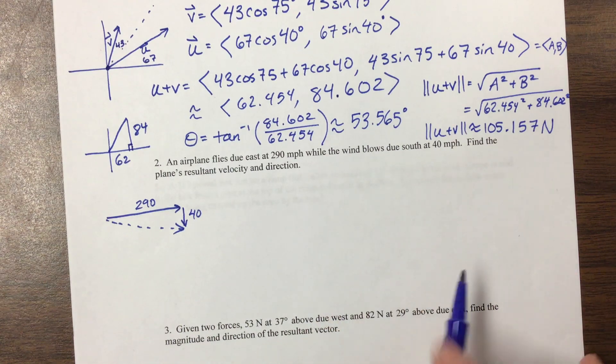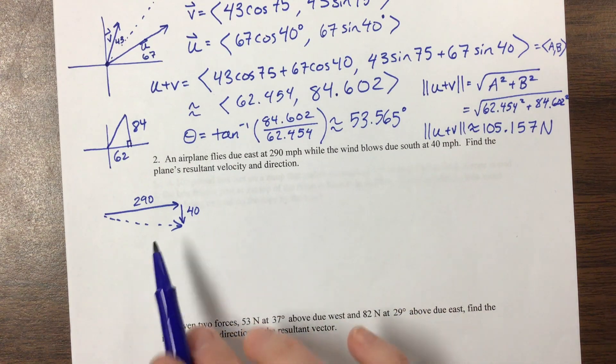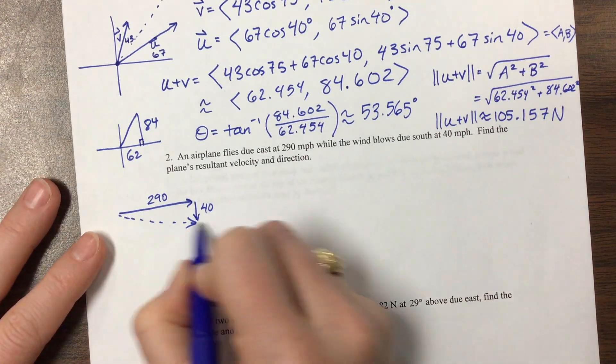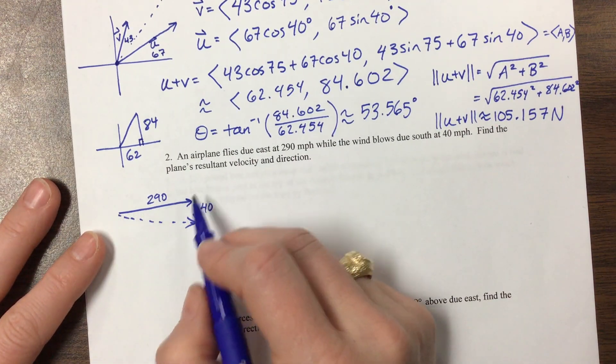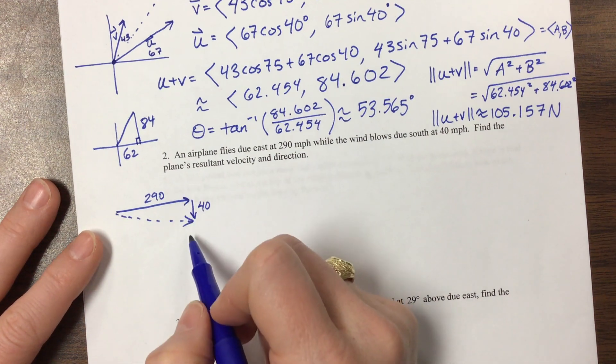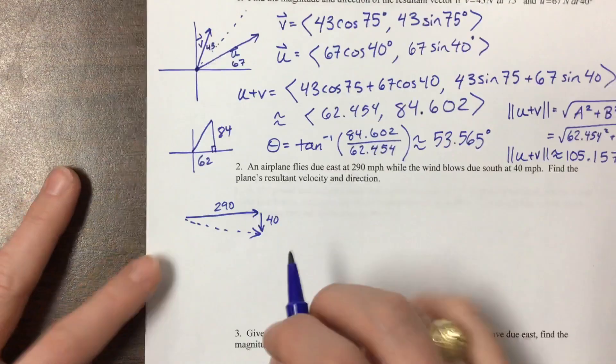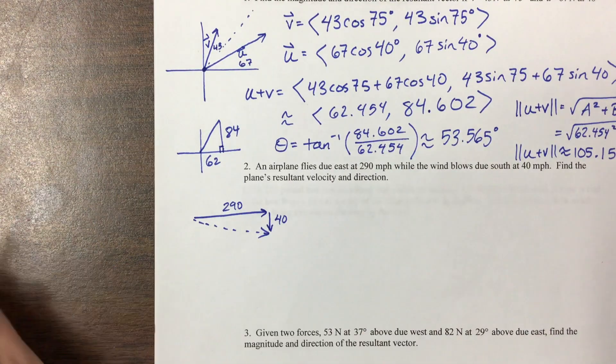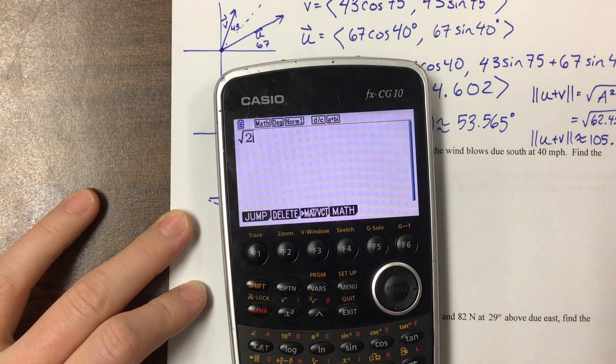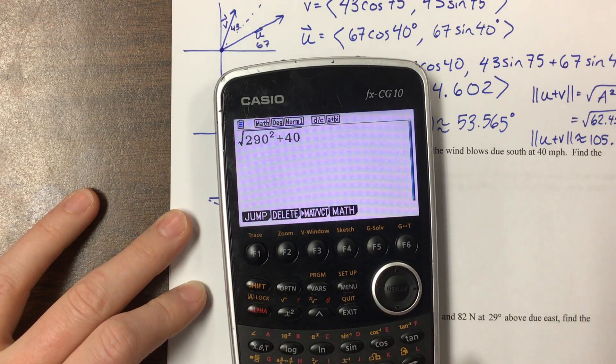The short way to do this problem is to just use Pythagorean theorem and inverse tangent, because this resultant has an x-coordinate of 290 and a y of negative 40. If I take the square root of 290 squared plus 40 squared.